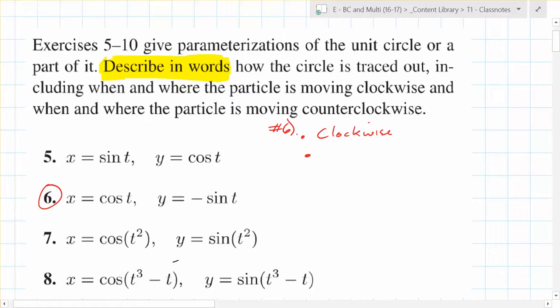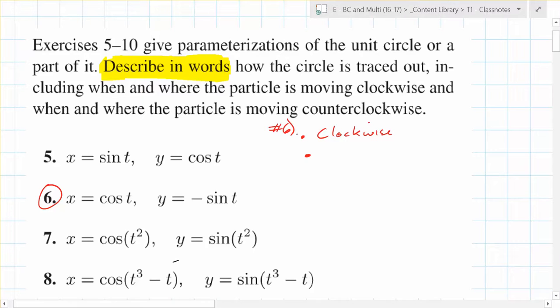Can someone tell me one other thing? The question asks you for two things. T can be anything — a trillion, right? What does the question ask you specifically? Where are the particles moving clockwise and where are the particles moving counterclockwise? Is it always moving clockwise? Yes. So: clockwise, always. That's another specific thing.